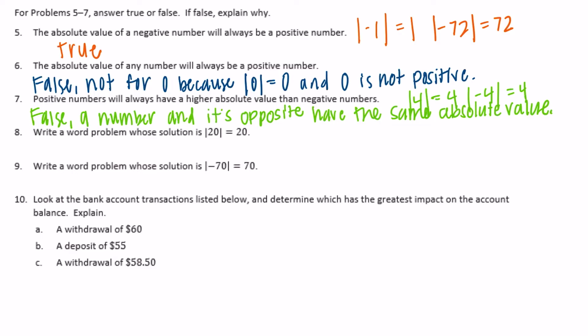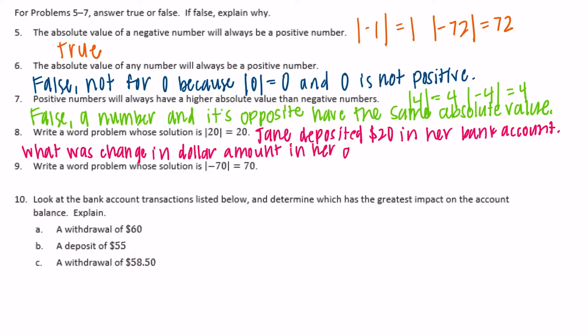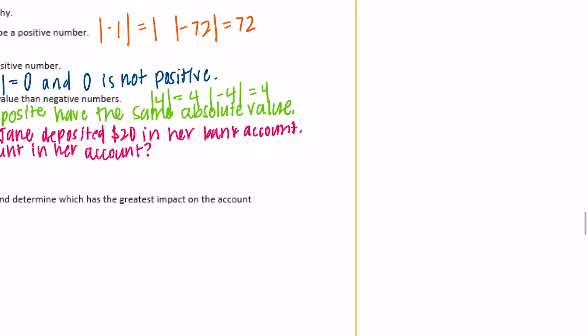Number 8: Write a word problem whose solution is |20| = 20. So maybe, I'm going to have to write small. Jane deposited $20 in her bank account. What was the change in dollar amount in her account? So that's saying she deposited $20, so it's positive 20. We want to know the change in account. So the absolute value of $20 would be equal to 20. So the change would be equal to $20 change in her account.